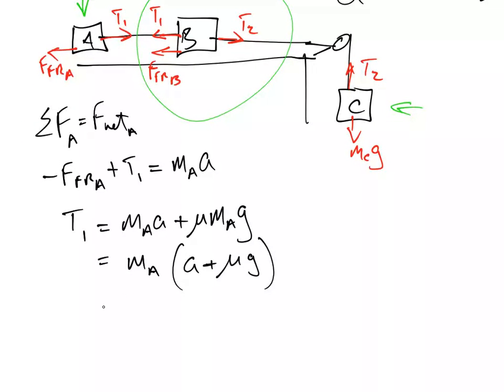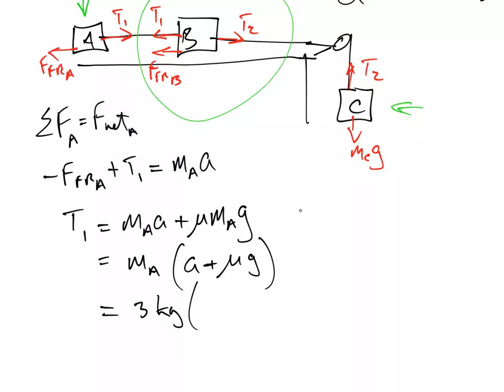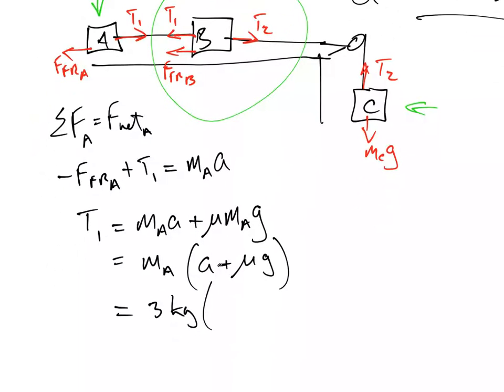And if we plug our values in, mA was 3. The acceleration, which we got before over here, was 4.08 plus 0.25 times 9.8. And that's going to give us, let's take a look, 0.25 enter 9.8 times 4.08 plus 3 times. We get an answer of 19.6. 19.6 newtons.